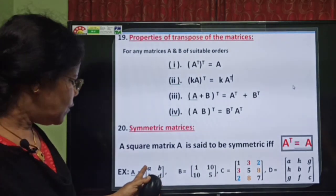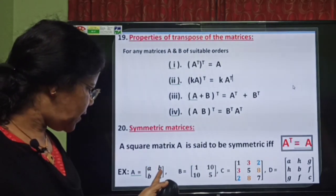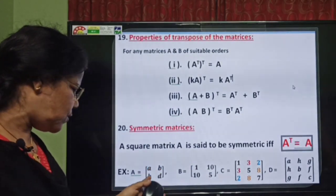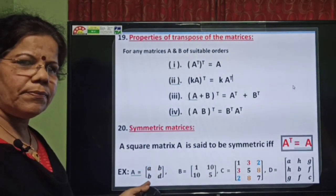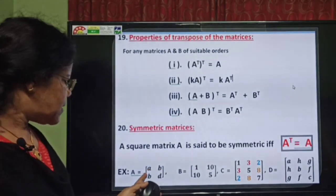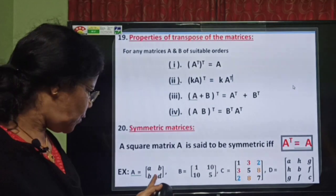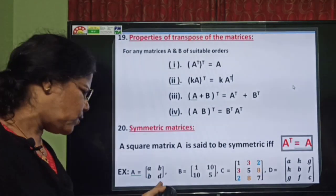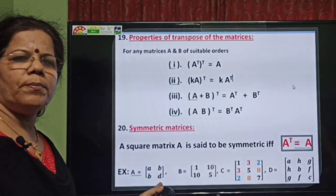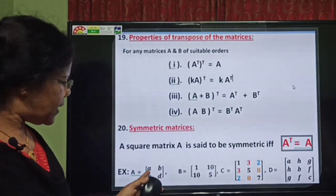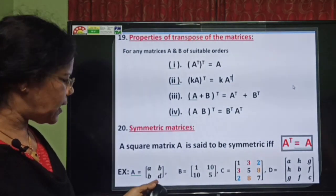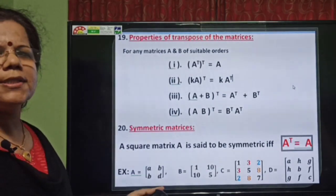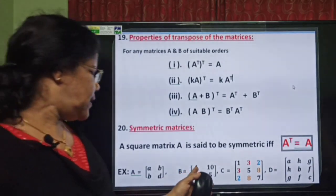Here is the peculiarity: the first row is A, B and the first column is also A, B. The second row is B, D and the second column is also B, D. So once you take the transpose, there is no change.